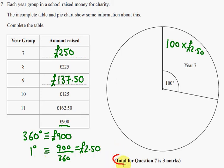Now, question 7 is a 3 mark question, so let's have a look at how you get those marks. The first one is a method mark for doing 900 divided by 360 to find 1 degree worth. The second mark is for seeing either 250 or £137.50. And the third and final mark is for seeing 250 and £137.50 in the correct positions.